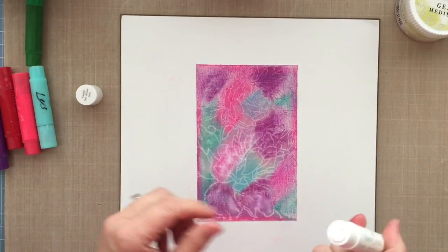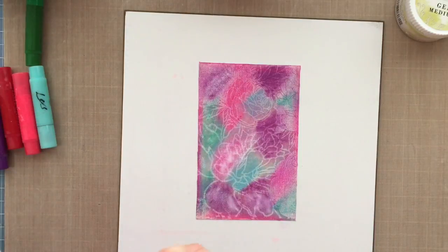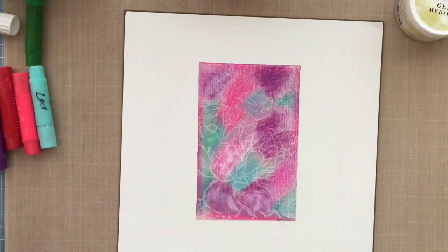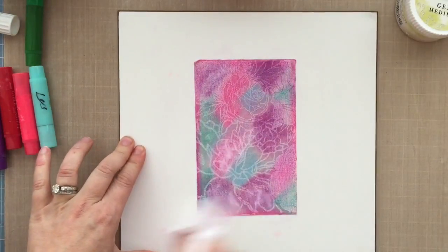So I'm going in with a coconut color gelato and just kind of lightening up some of those areas, almost creating a little shadow here. I think it's so pretty. I love gelatos and they're calorie free.